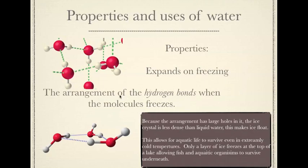What happens is the hydrogen bonding arrangement makes the water actually expand and take up more space. When water freezes, the positive hydrogens line up with the lone pair of electrons on the oxygen in a specific arrangement — the lowest energy arrangement — known as the ice crystal. You can see there are massive gaps between these water molecules in the ice crystal. Because of these large holes, the ice crystal is less dense than liquid water, and being less dense makes ice float.